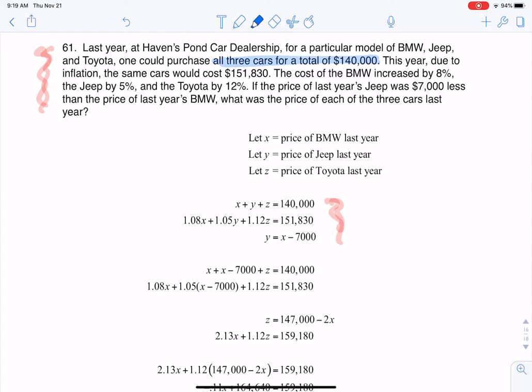So here's the first equation. If I define X to be the price of a BMW, Y to be the price of a Jeep, and Z to be the price of the Toyota from last year, then that's where I get this first equation: X plus Y plus Z equals $140,000.